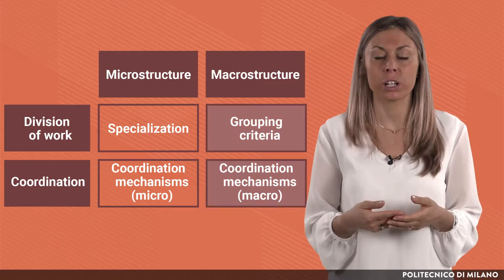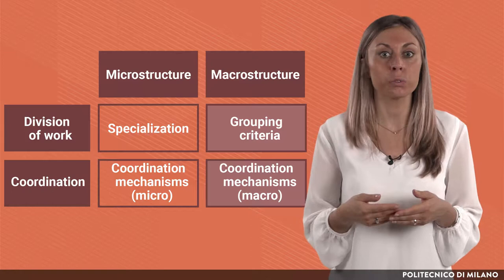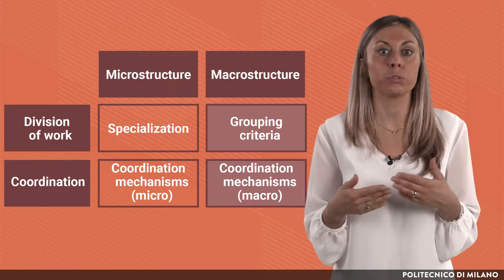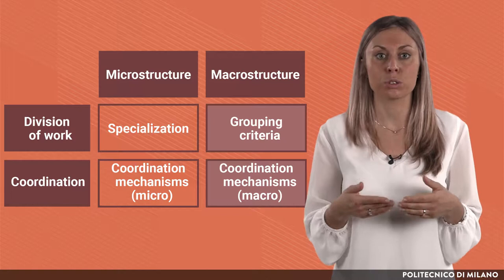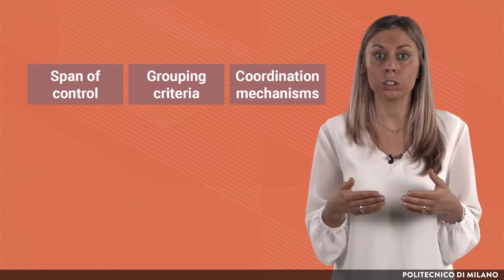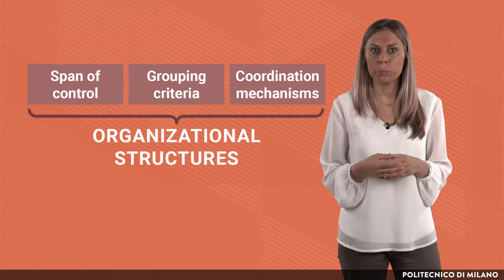In this lecture we are going to see the main archetypes of macro-structure, called organizational structures. Organizational structure is the overall configuration used by companies to arrange its activities and is generally represented through the organizational chart. The main organizational choices are not independent, but on the contrary strongly interdependent. Decisions about span of control, grouping criteria, and coordination mechanisms are interconnected to determine some standard organizational structures.